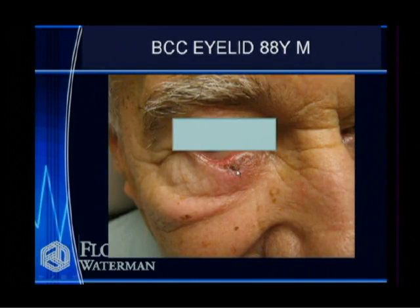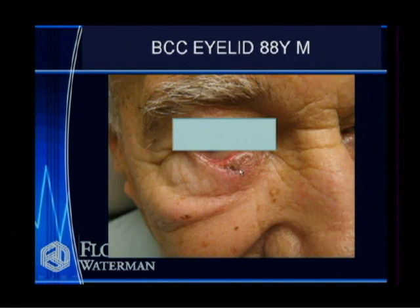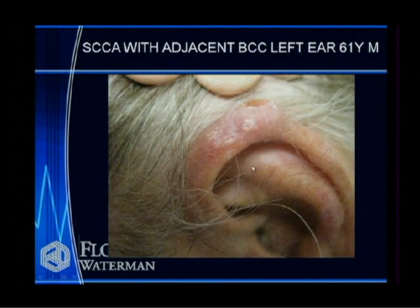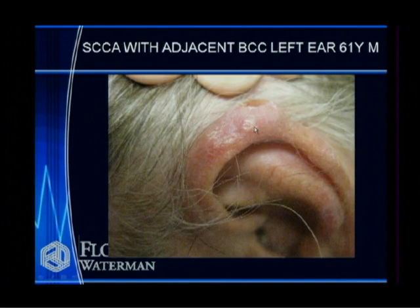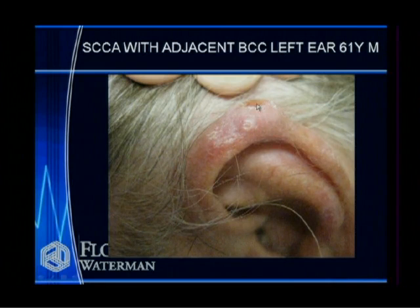Basal cell carcinoma can occur on the lower eyelid — the more sun-exposed area of the eyelids. Here's a skin cancer on the ear, like a little carbuncle — a raised lesion. The skin cancer involves the whole area around it, not just the visible bump.